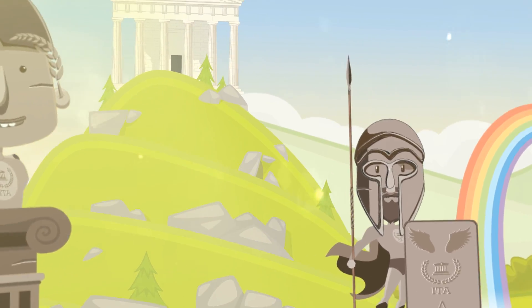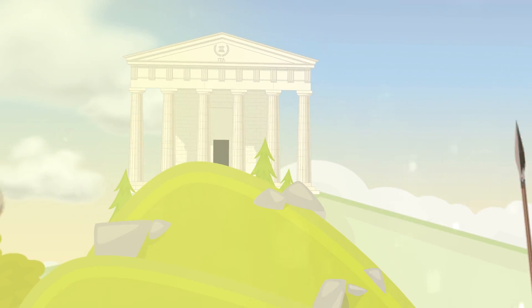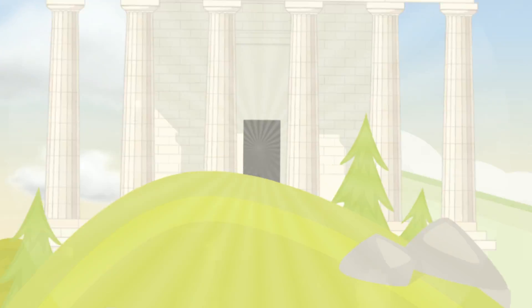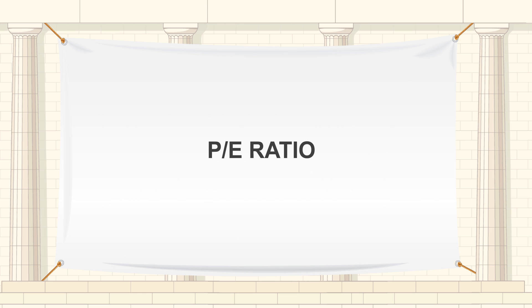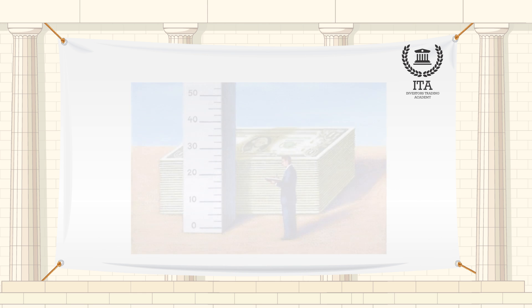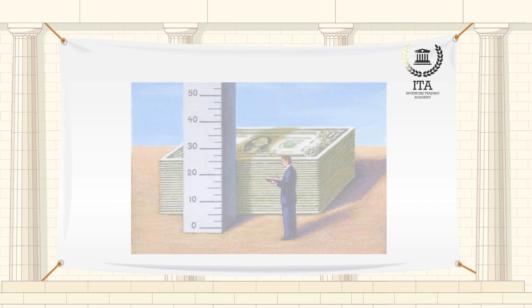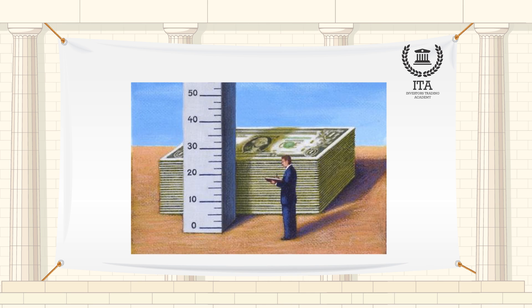Welcome to the Investors Trading Academy talking glossary of financial terms and events. Our word of the day is P.E. Ratio. P.E. Ratio, or price per earnings, is a very important term and is used in everyday language when speaking about a share or a company.